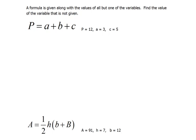Okay, in this example it says a formula is given along with the values of all but one of the variables. Find the value of the variable that is not given.